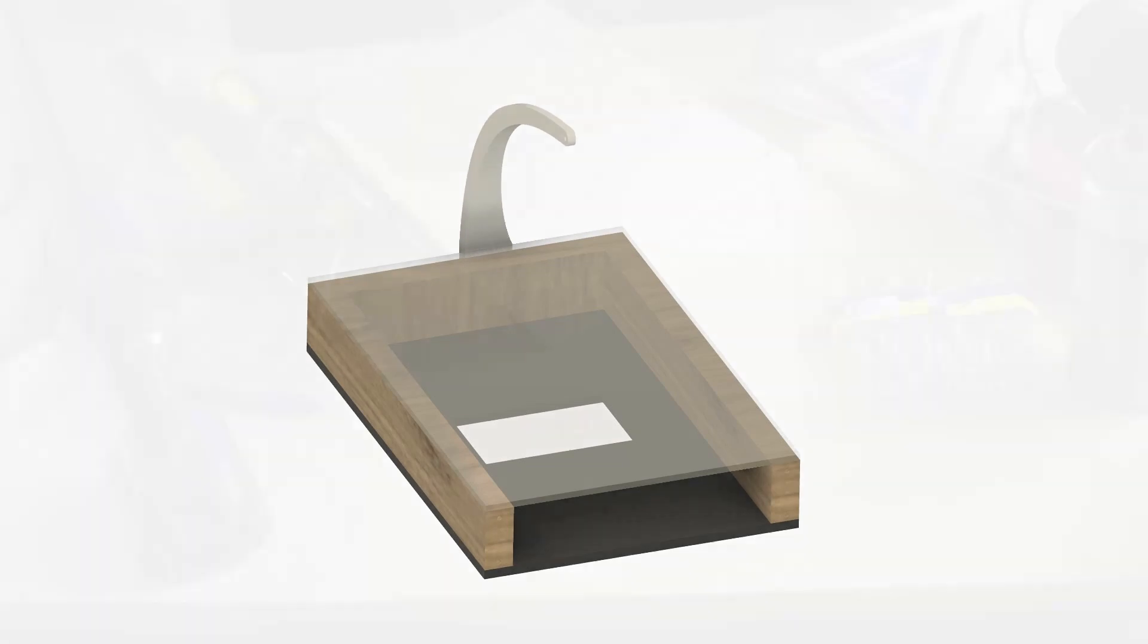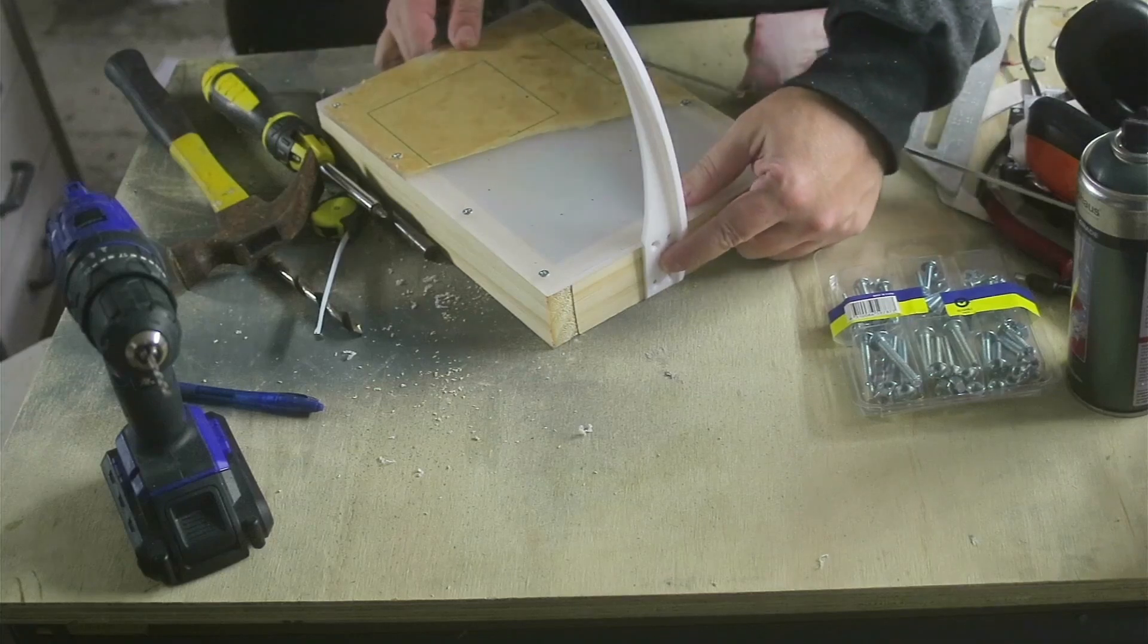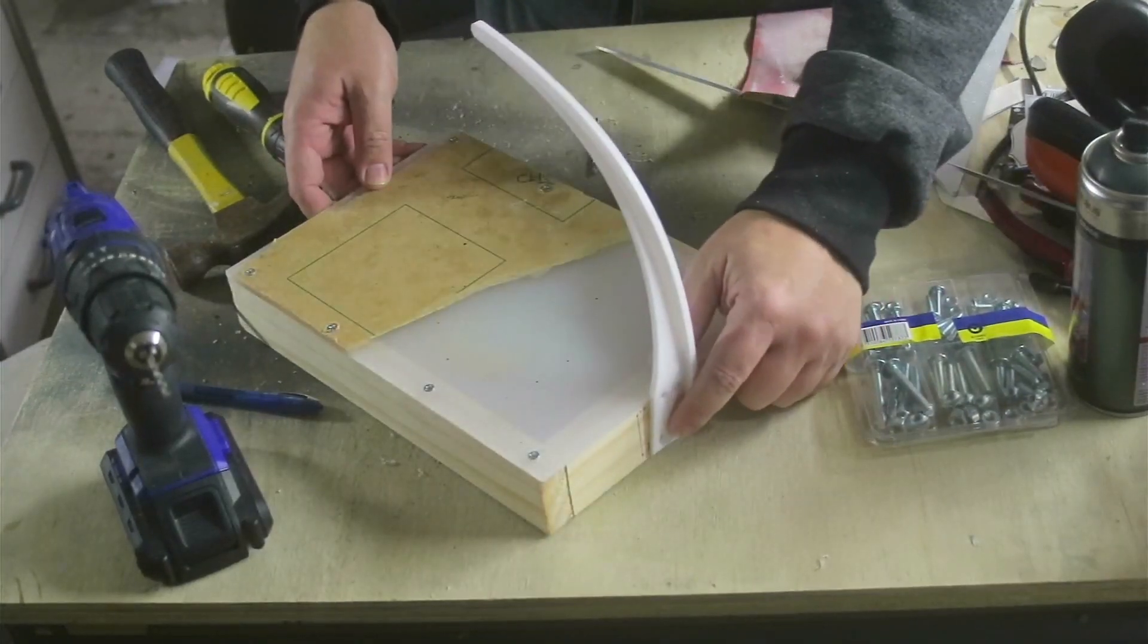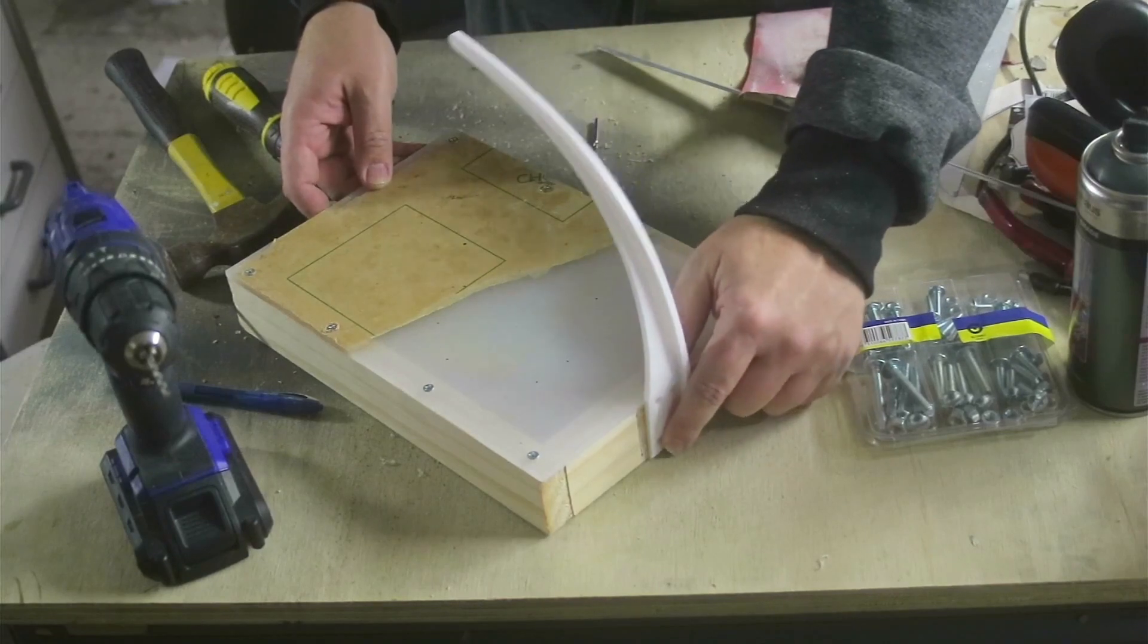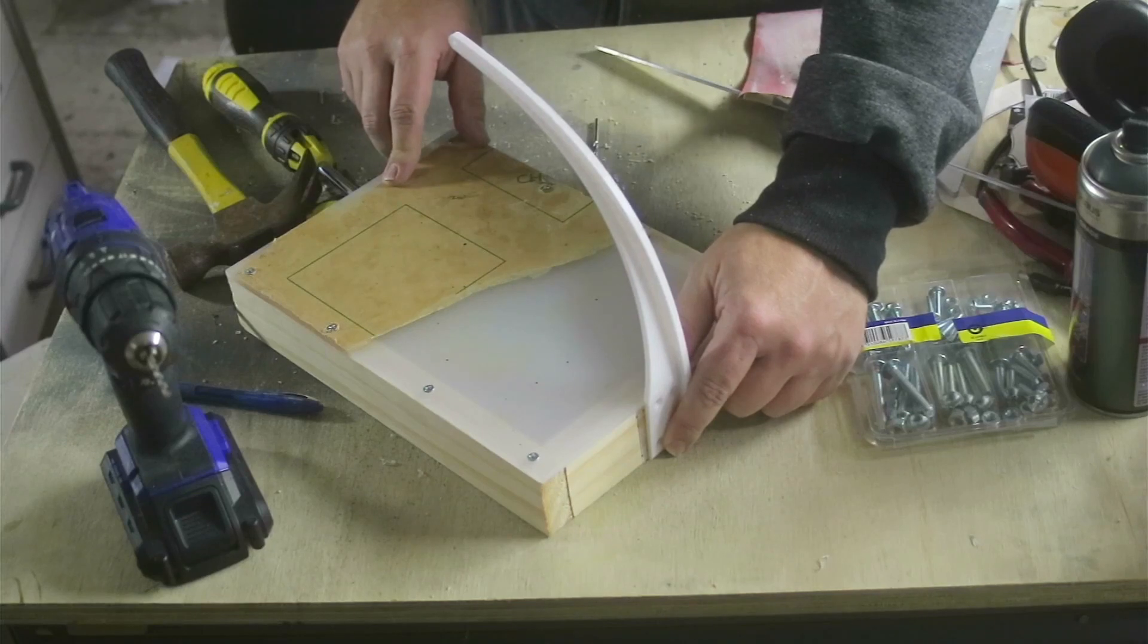Next thing to do is attach my bow. The thing with nichrome wire is once it heats up it starts to stretch out, so we need to give it a bit of tension. Normally you'd use a spring, but I'm just using the properties of this PLA material to keep the cable and keep the nichrome nice and tight when it's cutting.